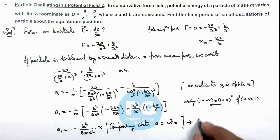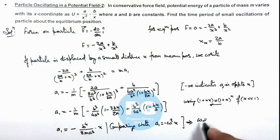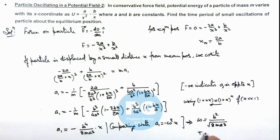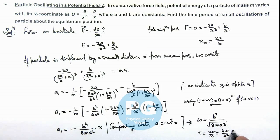This gives us the value of the angular frequency of oscillation. Taking the square root, omega equals b²/√(8ma³). From here we can calculate the time period of oscillation which is T = 2π/ω, or T = 4π/b² multiplied by √(2ma³). That will be the final result of this problem.